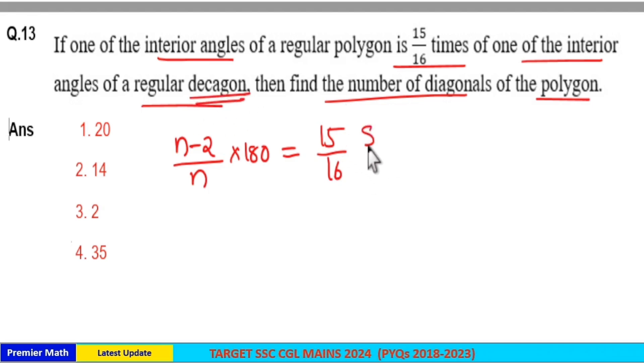So, which is equal to (10-2)/10 × 180, which is 8/10 × 180. This is the interior angle of a decagon.